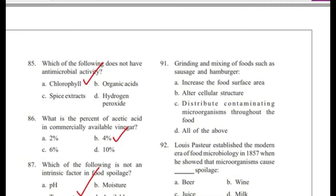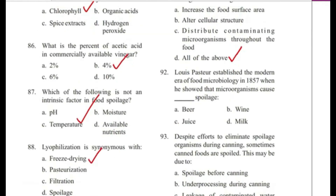Question 91: Grinding and mixing of foods such as sausage and hamburger — increases the food surface area, alters cellular structure, distributes contaminating microorganisms throughout the food, or all of the above? Answer is D, all of the above.